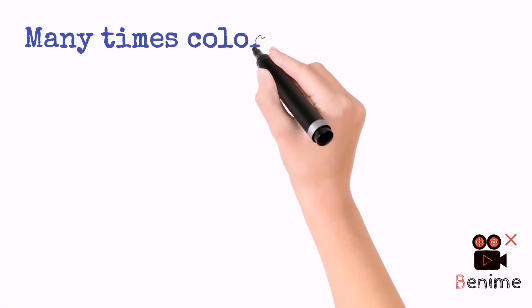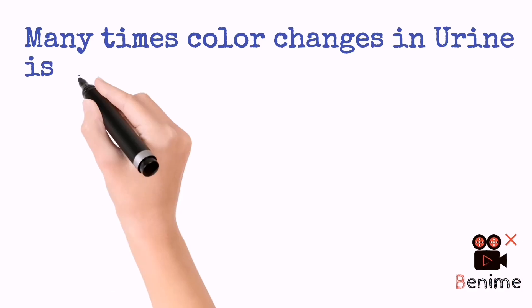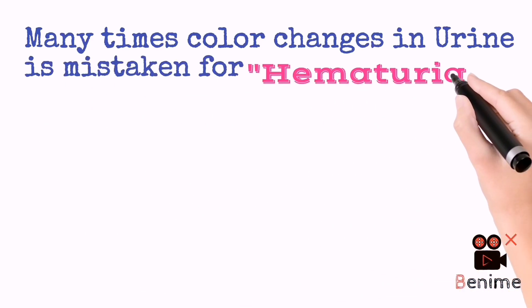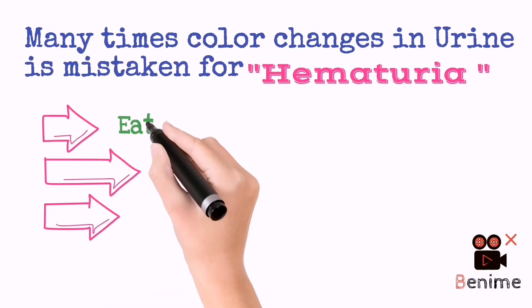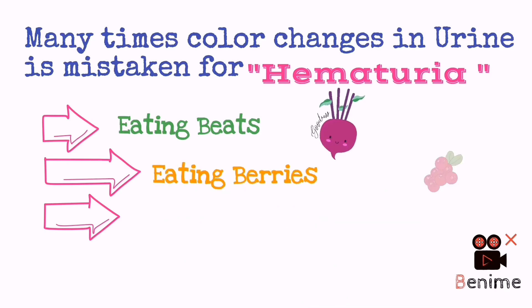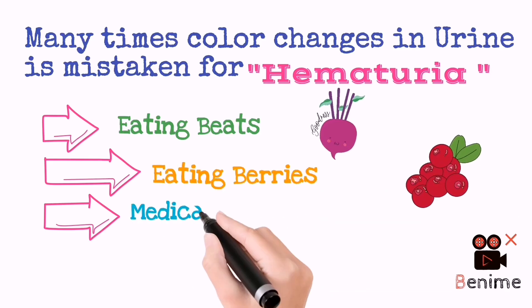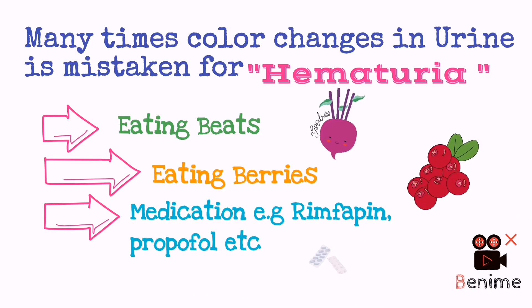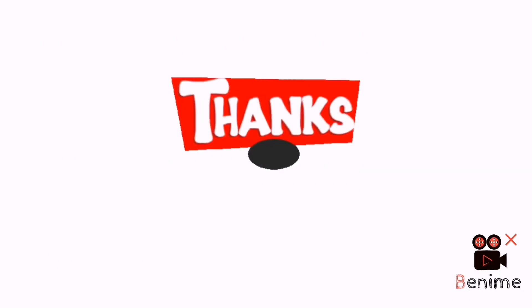There are some factors that change urine color and can be mistaken for hematuria. These include eating beets, eating berries, and certain medications like rifampicin, propofol, etc. Thanks for watching. Keep tuning for more informative videos.